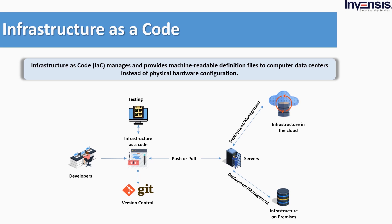Let's understand this better with the diagram. The developer configures the infrastructure in the form of a code file, which is stored in the Git repository — a version control tool as discussed earlier. Then it is sent for testing to check for bugs. If there are no bugs, it is pushed onto the servers from where it is either deployed into cloud infrastructure or on-premise infrastructure. On the other hand, if we want to get some information from the infrastructures, we use the pull command as shown in the diagram.